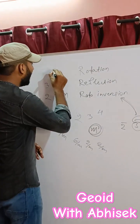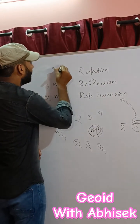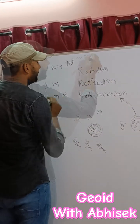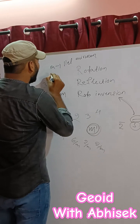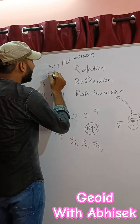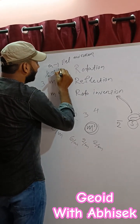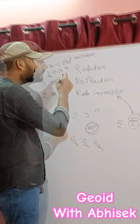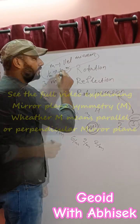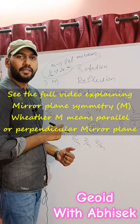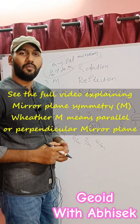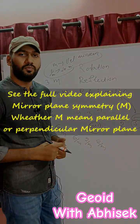Now, M means parallel mirror plane, and by M means perpendicular mirror plane. Is it completely true? To know the answer, see the full video, which will be uploaded tomorrow.